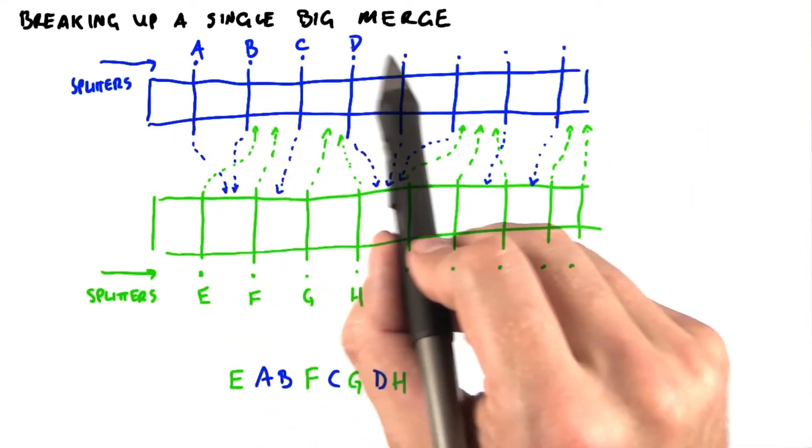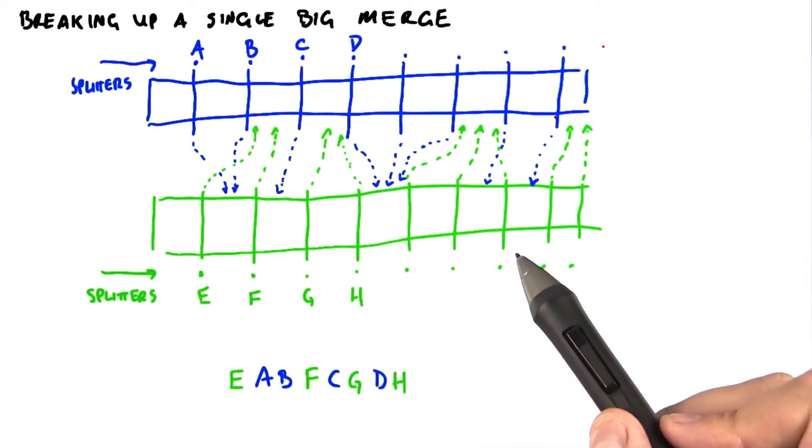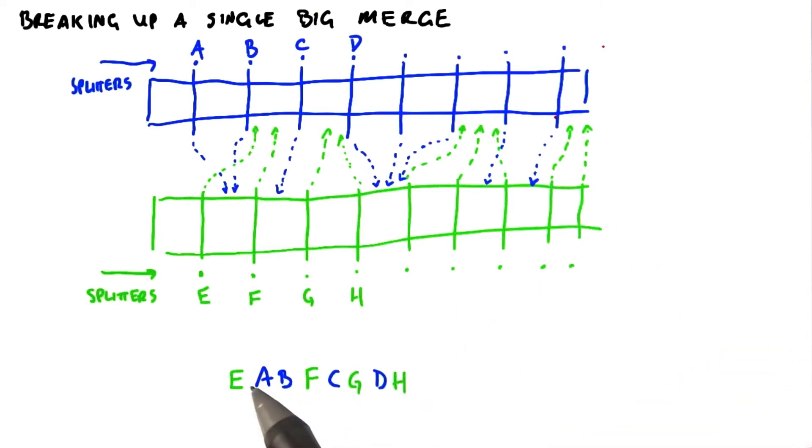And our list here is going to be A, B, C, D, and so on. And our list here is going to be E, F, G, H, and so on. So then what we're going to do is we're going to merge these splitters to get a single sorted list, say E, A, B, F, C, G, D, H.